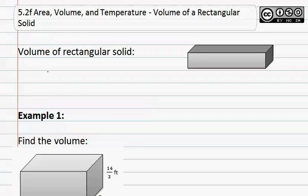The formula for the volume of a rectangular solid is volume equals length times width times height. The length is the longest side, the width goes across from it, and the height is vertical.